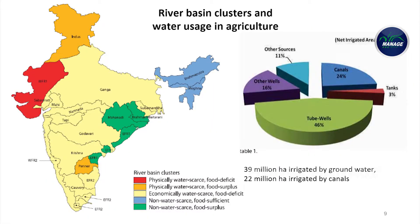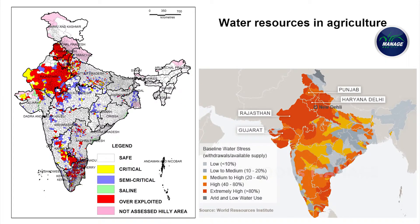This is a map showing the river basins of the country and how water is being used for irrigation. We are fortunate to have several water basins supporting agriculture. More than 39 million hectares of the total land mass is irrigated by groundwater and around 22 million hectares is irrigated by canals. These pictures also show that water stress in the northwestern states is getting severe, moving from the safe zone to critical zones with respect to water availability.